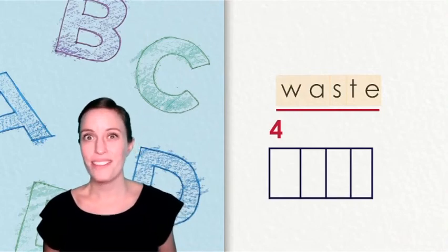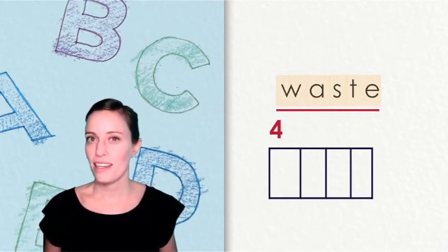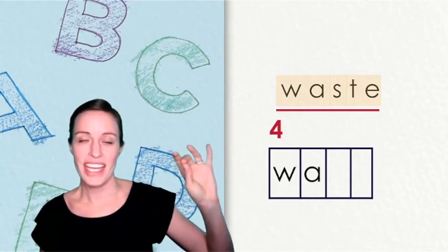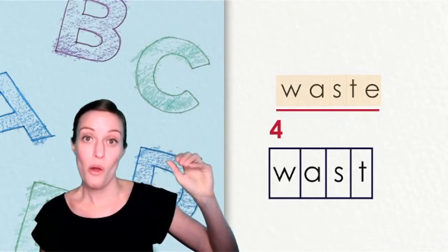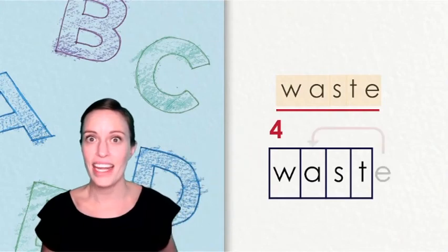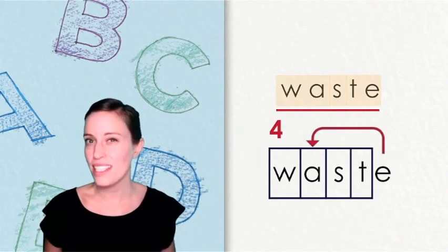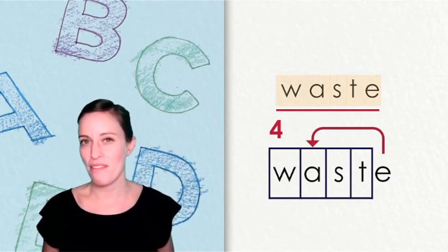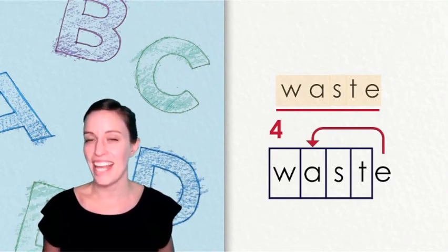There were four sounds in the word waste. Let's put those four sounds into our sound boxes. Can you help me out? W-A-S-T. Waste. Again, that E goes outside of the boxes because it's silent. But it is working hard to wave its wand and make the A say A.